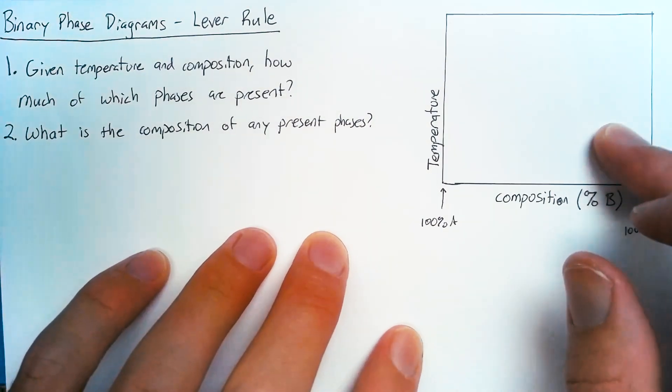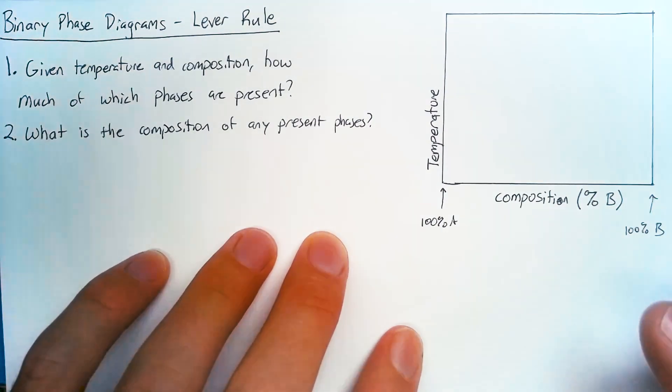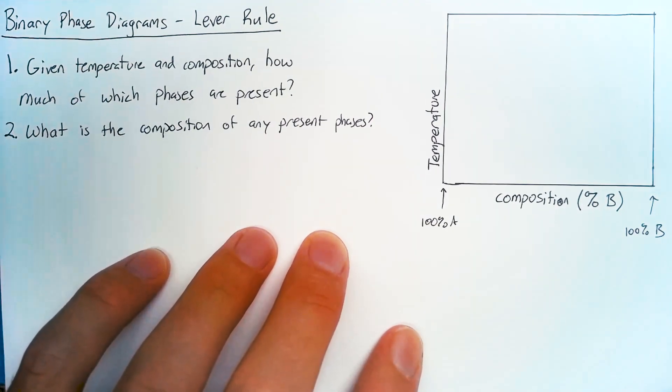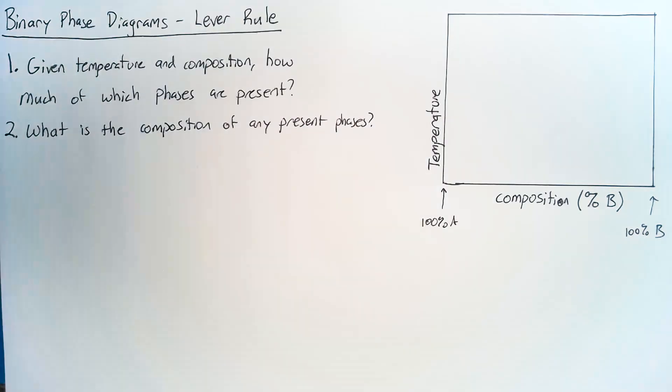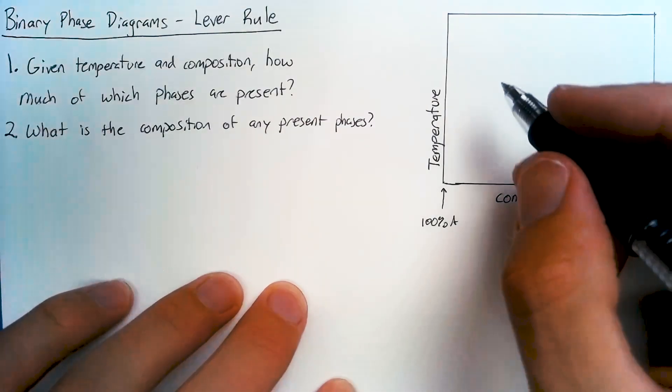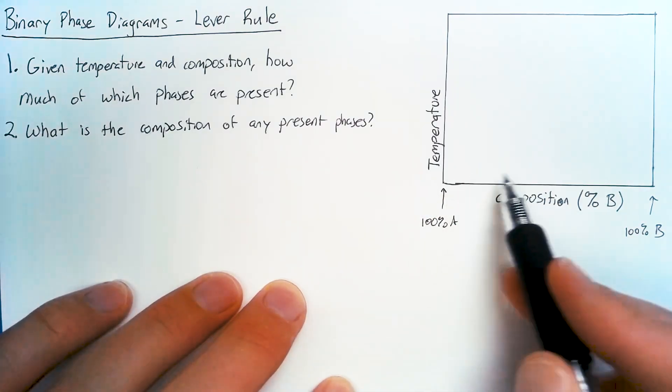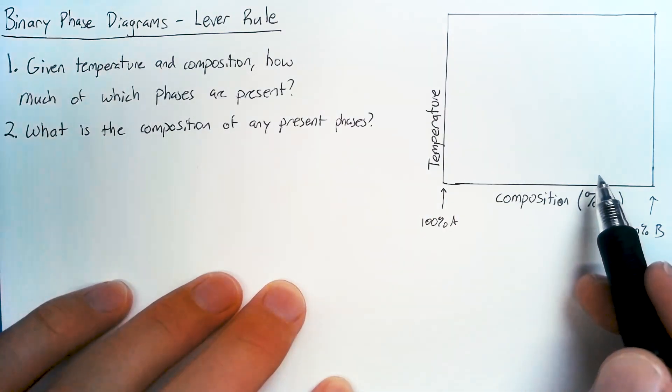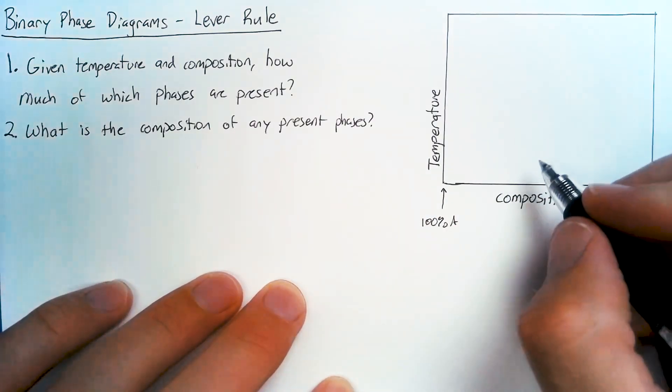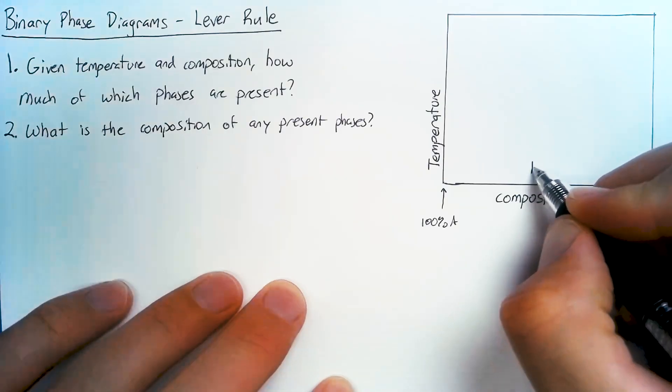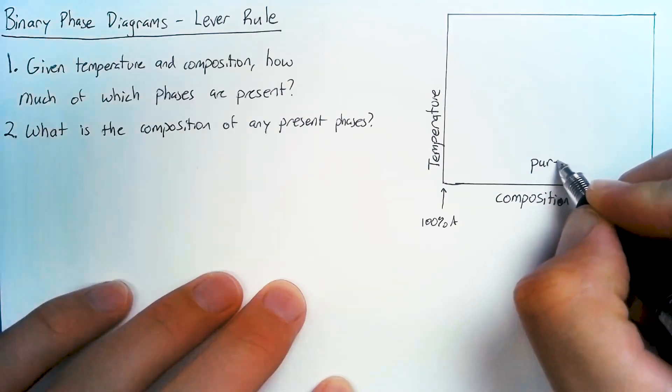Now these binary phase diagrams can get very complex, but we're going to keep things simple for this video. We're going to look at a pair of materials which form what's called a complete solid solution. And really what this means is if we're looking at a solid with these two materials, then the material has a single crystal phase, no matter what that composition is.